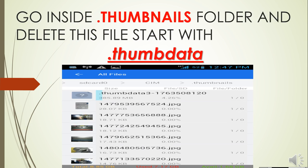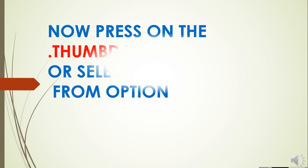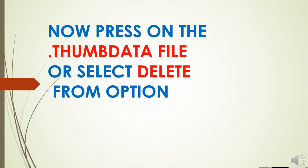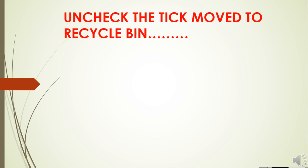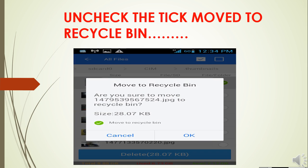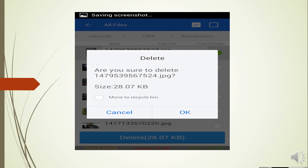Delete the file starting with .thumbdata. Press and hold on the .thumbdata file, or select delete from the options. A dialog box will come — uncheck the option that says 'move to recycle bin'.